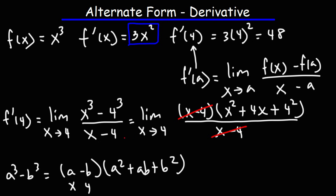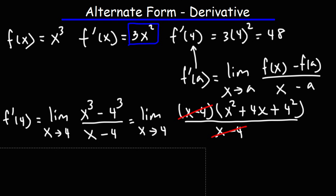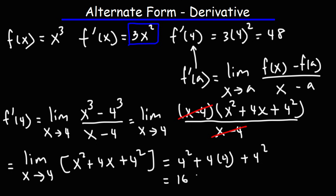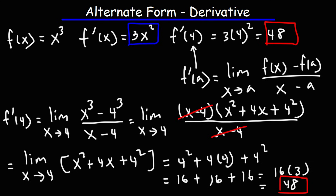We cancel x minus 4, and then use direct substitution, replacing x with 4. We get 4 squared plus 4 times 4 plus 4 squared, which is 16 plus 16 plus 16 — that's 16 times 3, which is 48. So the alternate form of the derivative evaluates the derivative for us at some point where x is equal to a. Make sure you understand the difference between the two formulas and how to use them.